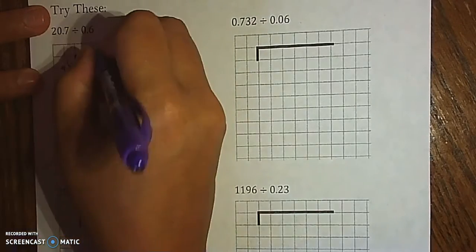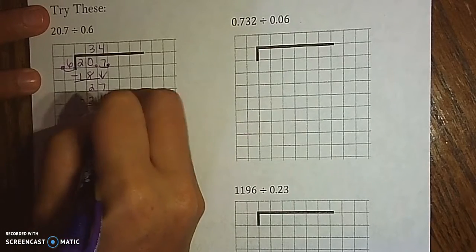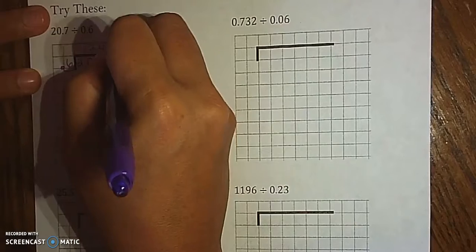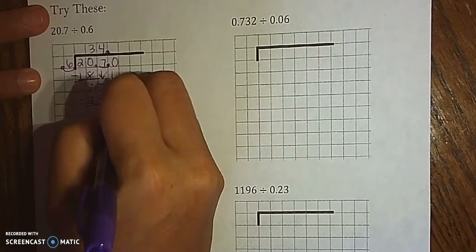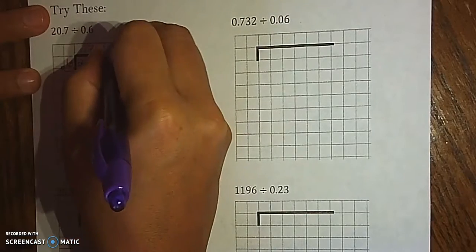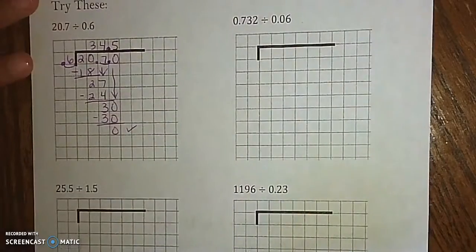6 goes into 27 four times. 6 times 4 is 24, which gives us a 3. As soon as I add that 0, my decimal goes up. 6 goes into 30, 5 times. Subtract 30, 0 remainder, good to go.